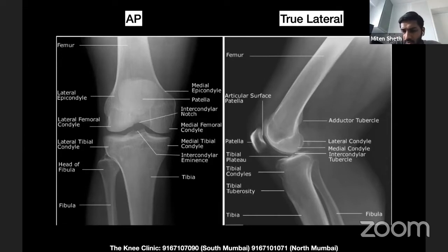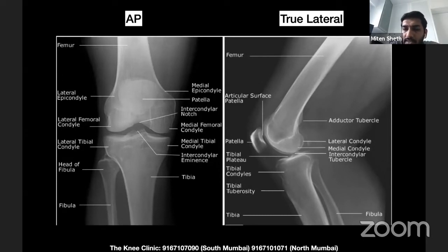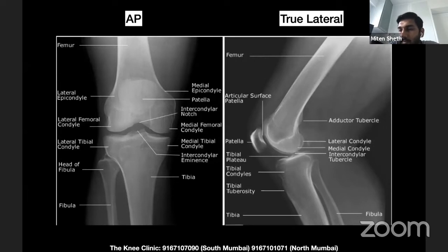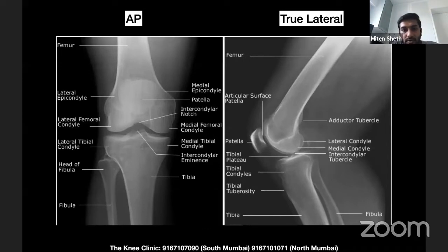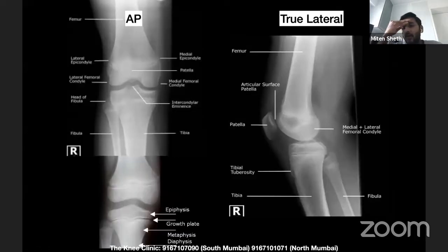Most lateral X-rays are preferably taken in around 20 to 30 degrees of flexion. In acute trauma with a very painful knee, a horizontal beam lateral in extension is also acceptable. In fact, for picking up hemarthrosis, horizontal projections of the lateral in extension are much better than the flexed knee position. The bony markings on these views are self-explanatory, assuming knowledge of the parts of the knee.